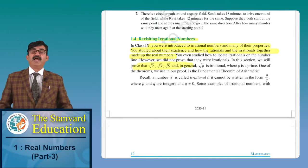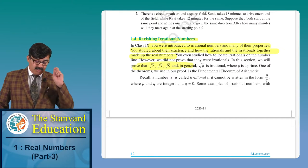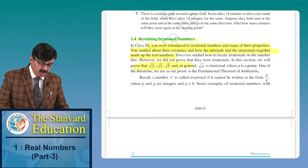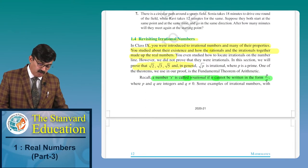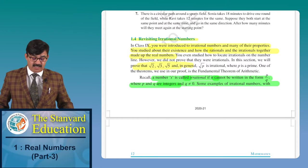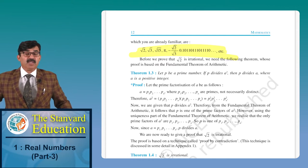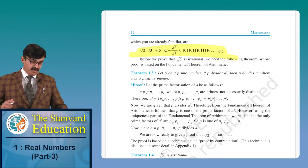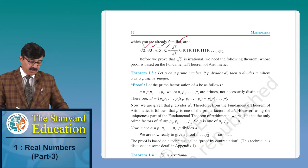Last class, in 9th, we had not proved that root 2, root 3, root 5 etc. are irrational. To prove anything irrational, a number S is called irrational if it cannot be written in the form P by Q, where P and Q are integers and Q is not equal to zero. Another definition: a number whose decimal expansion is non-terminating and non-recurring is also an irrational number. Some examples are root 2, root 3, root 5, pi, and root 2 upon root 3 — all are irrational.